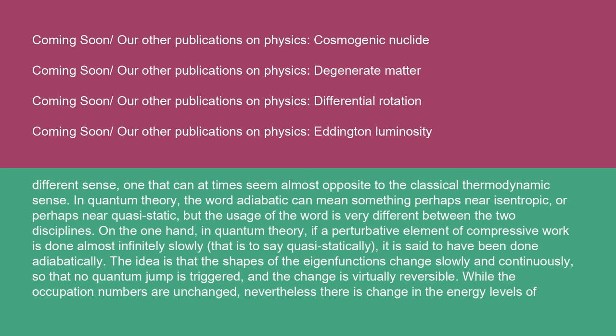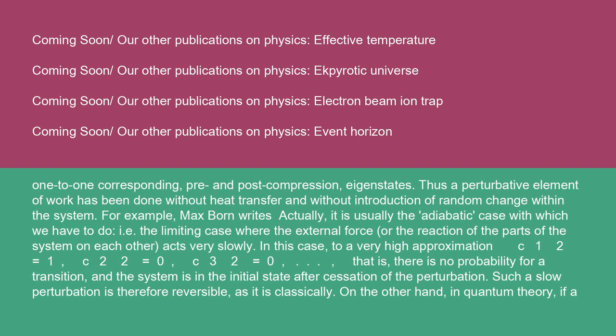Thus, a perturbative element of work has been done without heat transfer and without introduction of random change within the system. For example, Max Born writes: 'it is usually the adiabatic case with which we have to do — i.e., the limiting case where the external force acts very slowly. In this case, to a very high approximation, |c₁|² = 1, |c₂|² = 0, |c₃|² = 0 — that is, there is no probability for a transition, and the system is in the initial state after cessation of the perturbation.' Such a slow perturbation is therefore reversible, as it is classically.